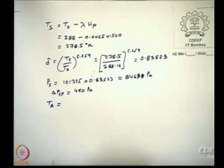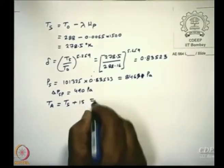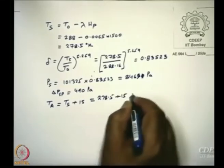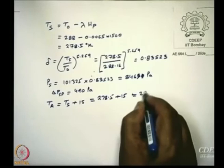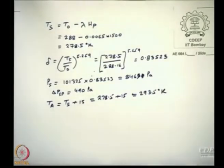Now the next thing is what is the value of delta P superpressure? This is 490 Pascals. What about the ambient temperature? Will it be equal to T_S? T_S is the standard air temperature. So what will it be? This will be equal to T_S plus 15, that is 278.5 plus 15. This is the value of T_A, 293.5.